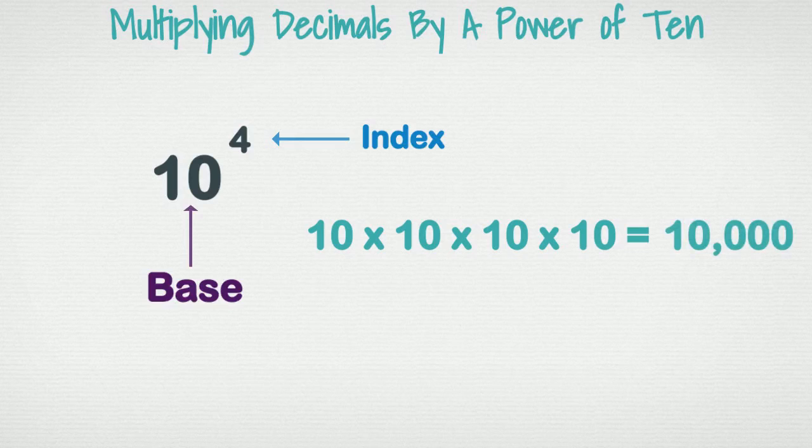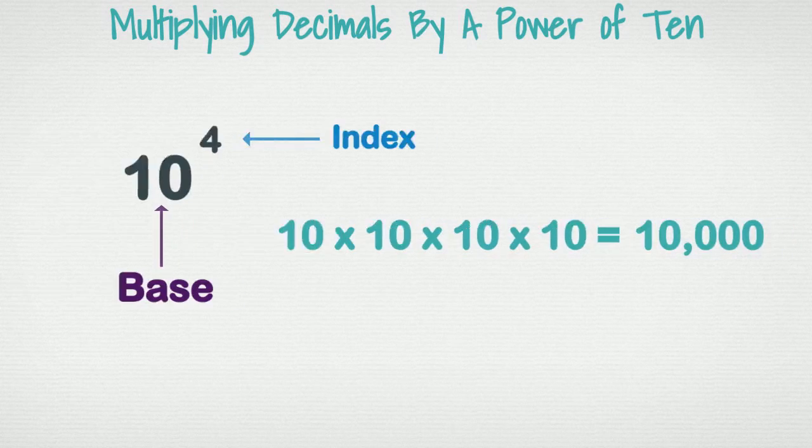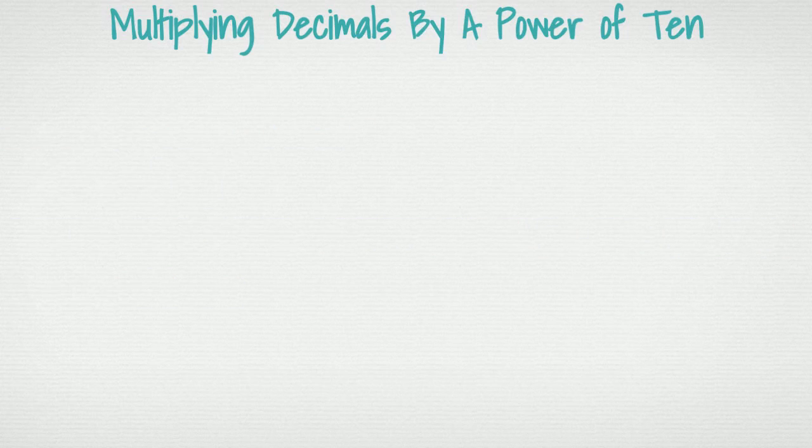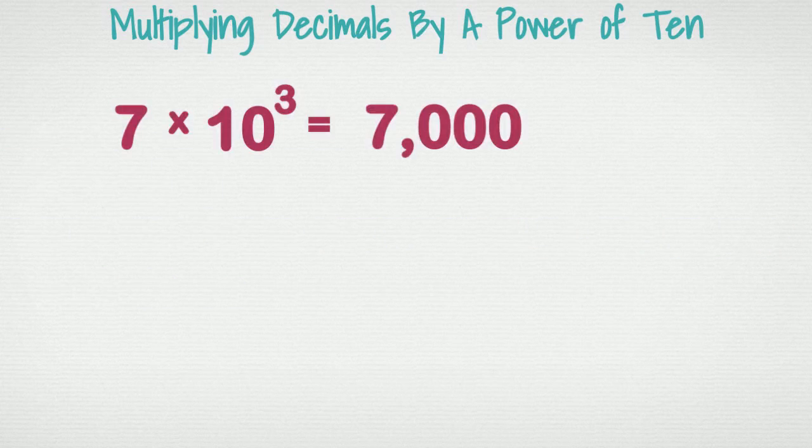Now, last time we multiplied whole numbers by a power of ten and found a similar pattern. For example, seven times ten cubed, the answer would be seven followed by three zeros, so seven thousand. You simply take the whole number and add the corresponding number of zeros from your exponent.